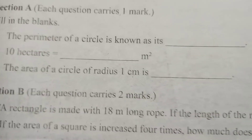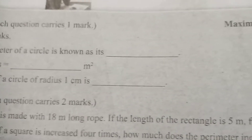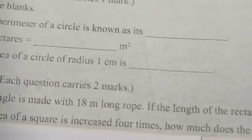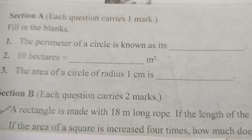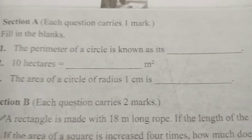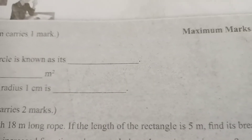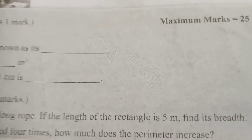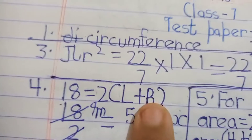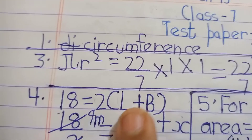Question four: a rectangle is made with an 18-meter long rope. If the length of the rectangle is 5 meters, find its breadth. Since the rope forms the boundary, the perimeter is 18 meters. So: 2 multiplied by (length plus breadth) equals 18.